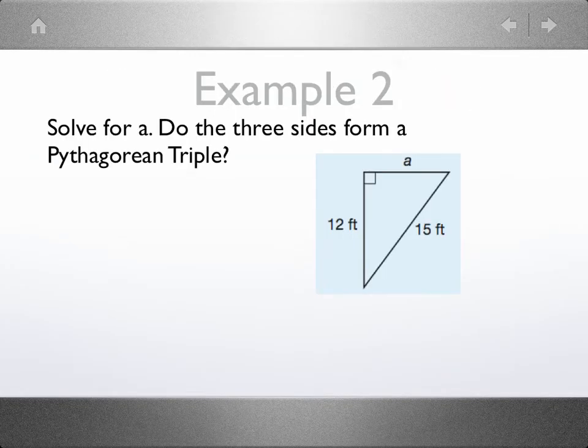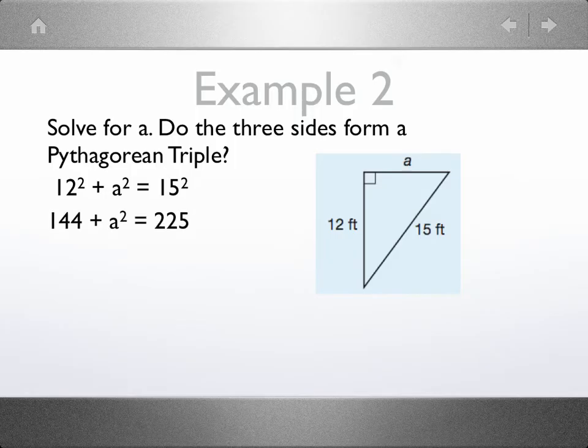So in this example, we're asked to first find a, then do the three sides form a Pythagorean triple? Well, we first write down the Pythagorean theorem and simplify the equation by squaring the numbers. Isolate the variable by subtracting 144 from both sides. Now we take the square root of 81, and we get that a equals 9.